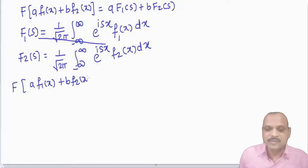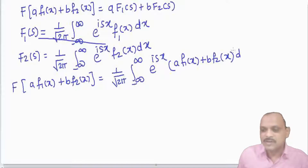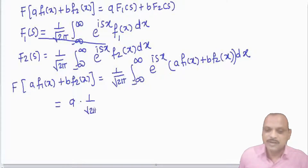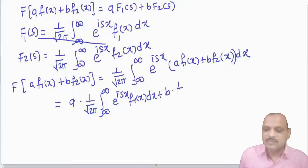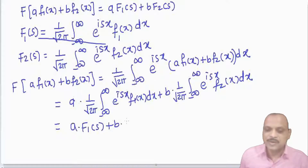The Fourier transform of a·f1(x) + b·f2(x) equals (1/√(2π)) ∫ from −∞ to +∞ e^(isx) · [a·f1(x) + b·f2(x)] dx. Separating the integral, we get a·F1(s) + b·F2(s). So the Fourier transform is linear. This is the first property.